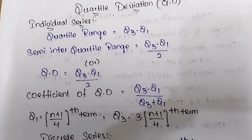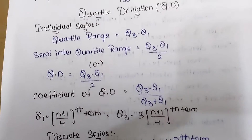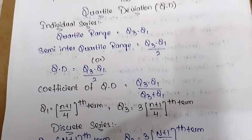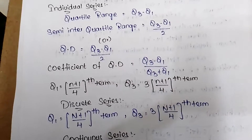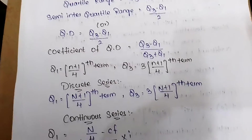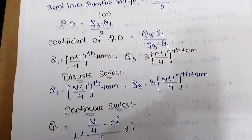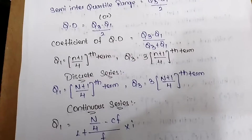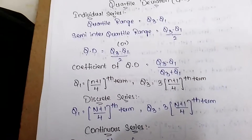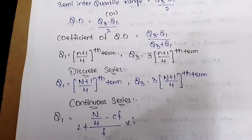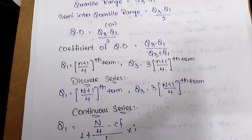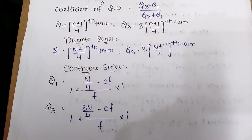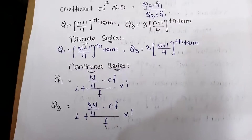Quartile deviation: quartile range = Q3 − Q1; semi-interquartile range = (Q3 − Q1) / 2; quartile deviation = (Q3 − Q1) / 2. Coefficient of quartile deviation = (Q3 − Q1) / (Q3 + Q1). For individual series: Q1 = (n+1)/4 th term; Q3 = 3(n+1)/4 th term. For discrete series: same formulas with n = total frequency. For continuous series: Q1 = L + (n/4 − cf) / f × i; Q3 = L + (3n/4 − cf) / f × i.